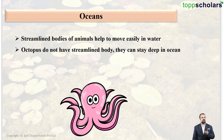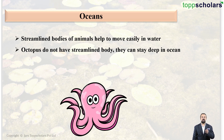Such animals are able to stay very deep in the ocean. Octopi have many different types of arms, which we call tentacles, and these help them to swim in the water.